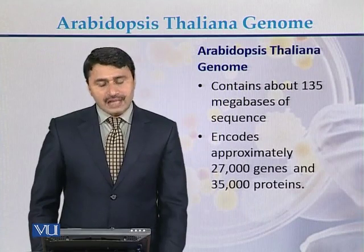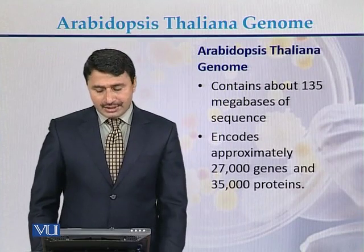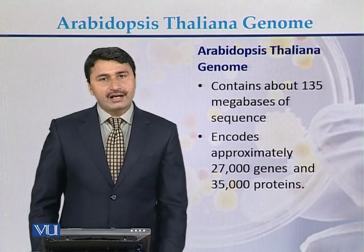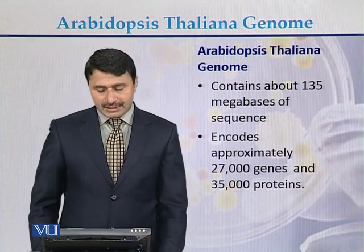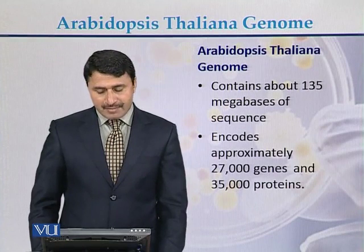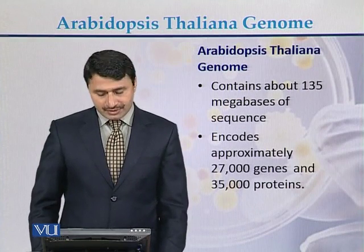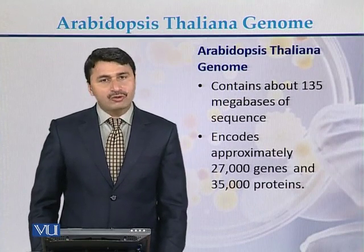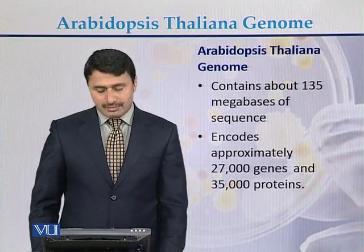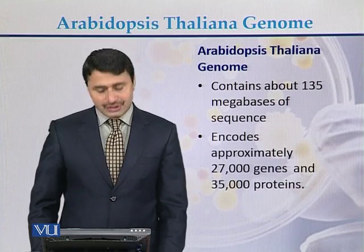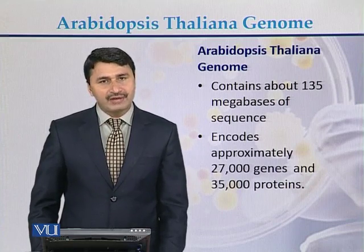Arabidopsis thaliana contains approximately 135 megabases of sequence. It encodes approximately 27,000 genes and 35,000 proteins.